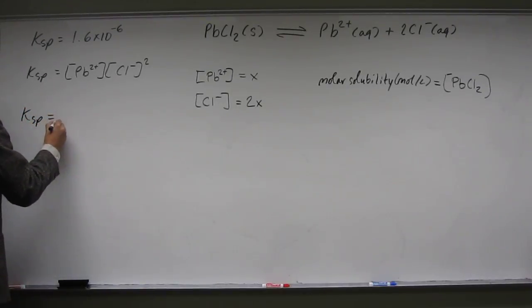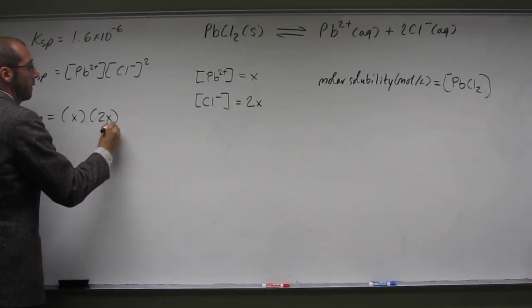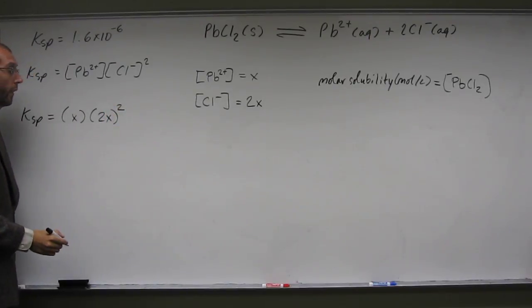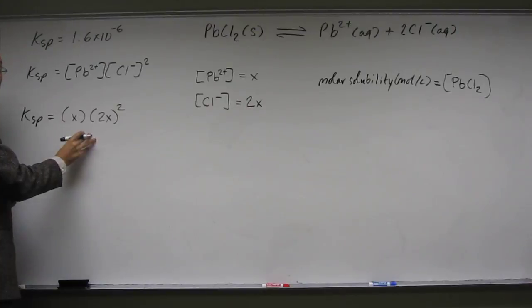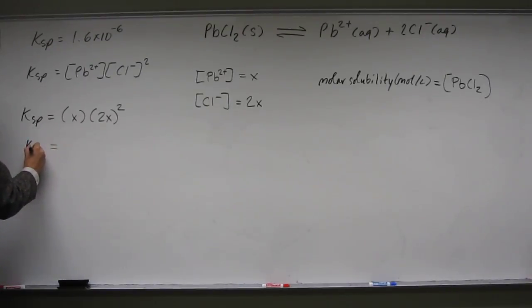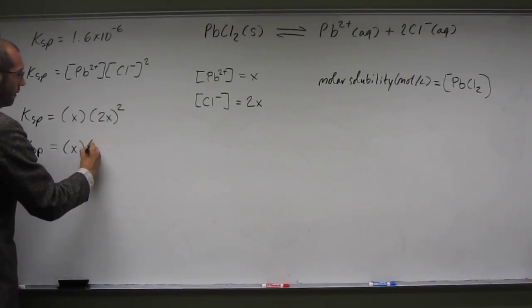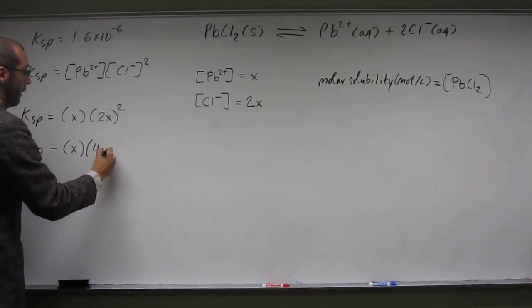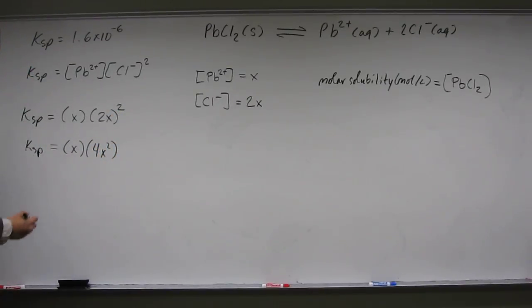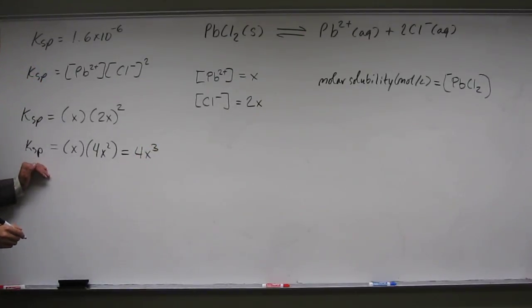What do we've got? We've got the Ksp equals X times 2X, all of it squared. So, let's solve for X. So, solving for X, we're going to get on this side Ksp, and we'll just say X. So, 2 squared is 4, X squared is that X squared. You got that? So, 4X squared times X is going to be X cubed. 4X cubed. So, that's going to equal 4X cubed equals Ksp.